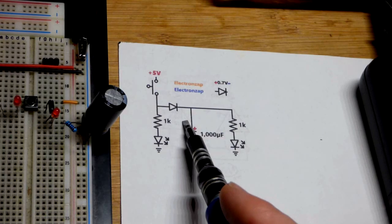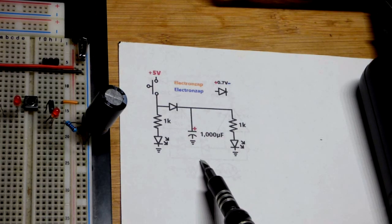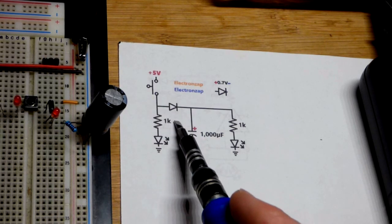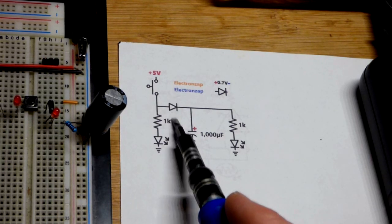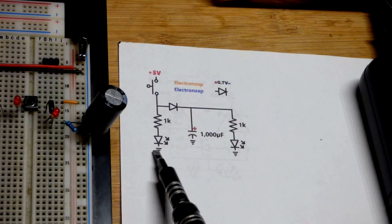So now here's a schematic of the simple circuit I put together that illustrates how you can power two separate circuits with one switch. So when I close the switch, you can see that LED lights up.